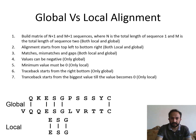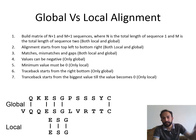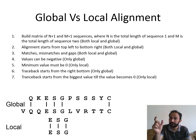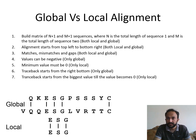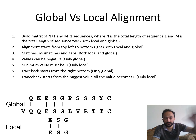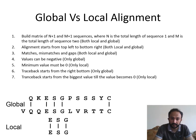One more difference: in global alignment, traceback starts from the right bottom cell to the top left cell to find the best end-to-end alignment — that is why it is called global alignment. But in local alignment, traceback starts from the maximum value cell. We identify the maximum-valued cell, for example if the value is eight, and we trace back to the cell whose value is zero, stopping just above zero. That region is what we align in local alignment.